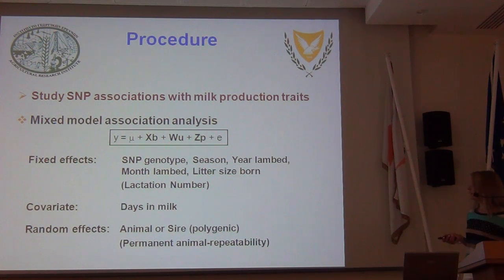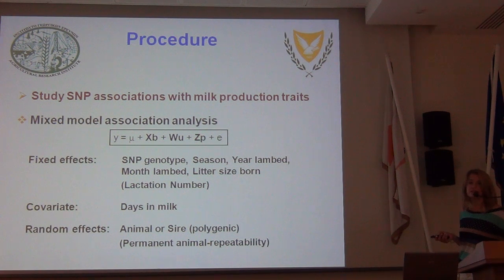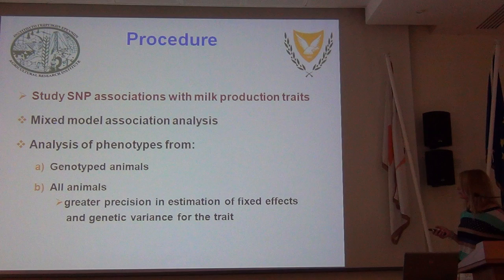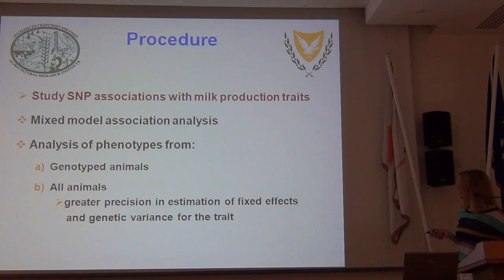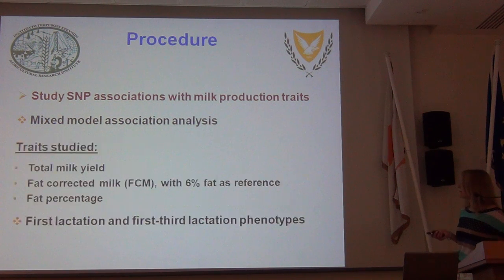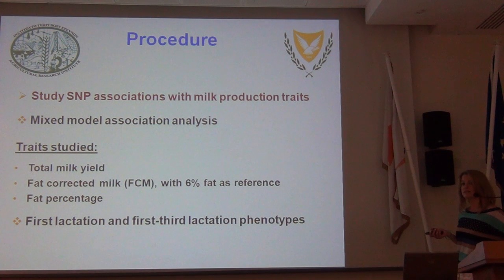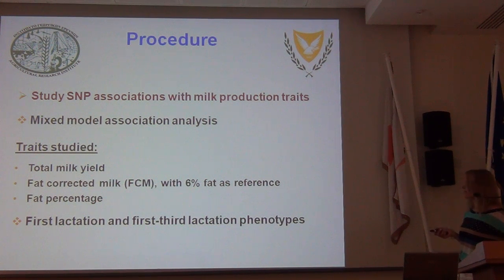In the random effects part, we have the polygenic effect, which is either an animal or a sire effect, and in cases when multiple lactation phenotypes are analyzed, we fit a permanent animal or repeatability effect. We fitted this model to analyze phenotypes either from just the genotyped animals for each gene, or from all animals for which we had phenotypes, including those with genotypes. The traits we studied are total milk yield, fat-corrected milk — corrected to 6% fat content as reference — and fat percentage, all analyzed separately for first lactation or across first to third lactation.